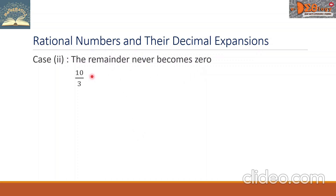One example here: 10 over 3. In decimal, this is 3.33333 and so on.